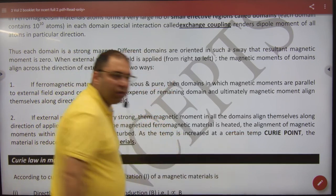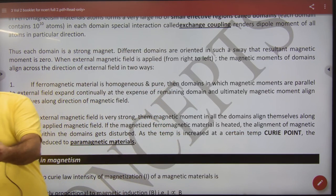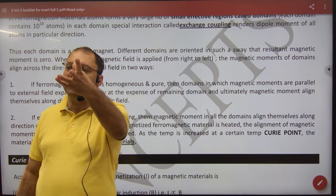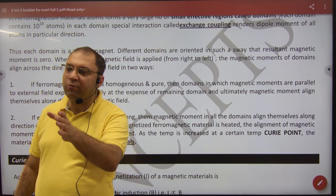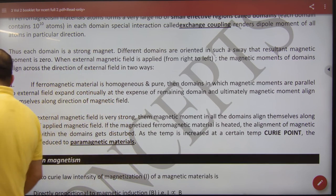Curie point is the point when you heat and temperature increases and you can convert the ferromagnetic material to paramagnetic. What do we call that? Curie temperature or Curie point.